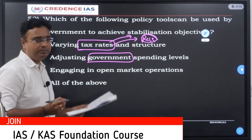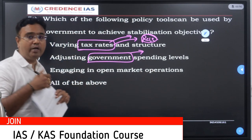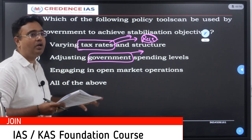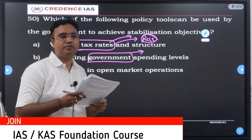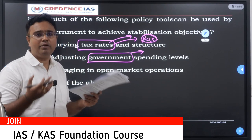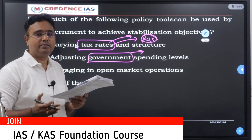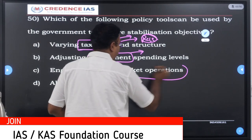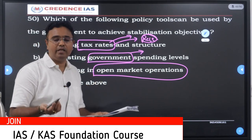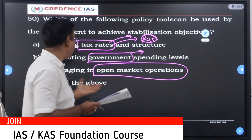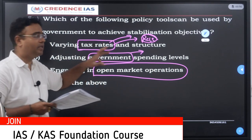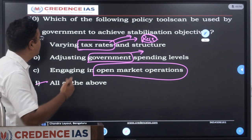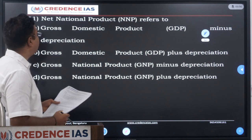Similarly, there are government spending levels also. During recession, the government needs to spend more so that people get money, whereas they also need to cut down unnecessary expenditures — for instance, arranging public functions in a grand manner. Then, engaging open market operations: the RBI does this to manage the economy by selling or purchasing government securities in the open market, so that they adjust the cash flow or money supply in the economy. All these are tools used to achieve the stabilization objective.